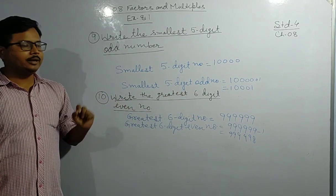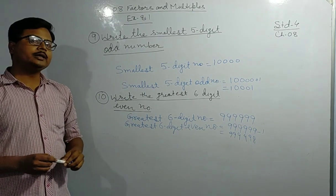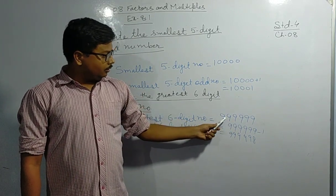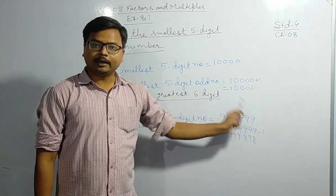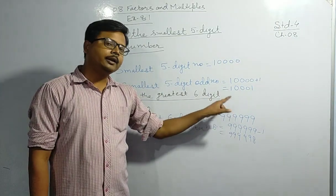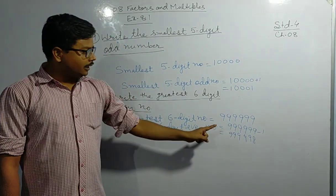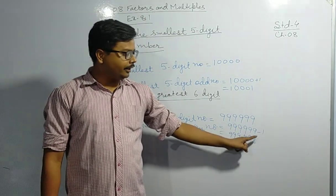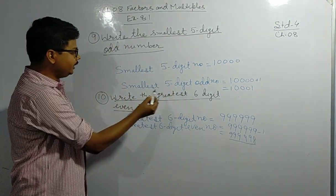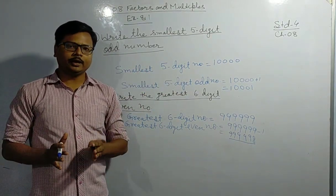Question number ten: write the greatest six-digit even number. The greatest six-digit number is 9,99,999, but it is not an even number. So we subtract one, giving 9,99,998, which is the greatest six-digit even number. You have to solve all these questions in your classwork copy. Thank you and have a nice day.